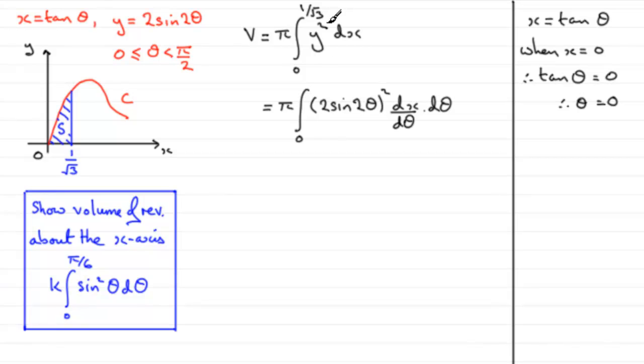Now, we need to get the upper limit for theta when x is 1 over root 3. So, again, we'll do this. When x equals 1 over root 3, then what we've got is that, therefore, the tan of theta equals 1 over root 3. And to get what theta is, we need to take the inverse tan of both sides. So, therefore, theta equals the inverse tan of 1 over root 3.